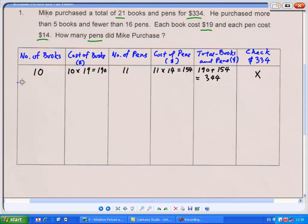So let's do another guess. Since we have guessed, our total cost is too high, we have to reduce the cost. Since the books are more expensive, we should have less books. Let's guess 9 books. If he bought 9 books, how many pens did he buy? 21 minus 9, that would be 12 pens.